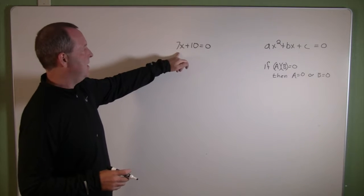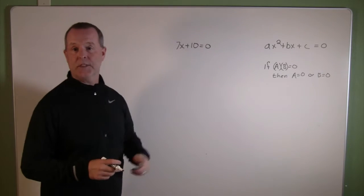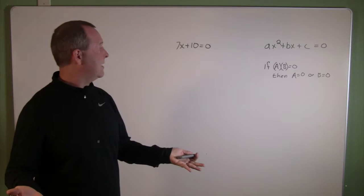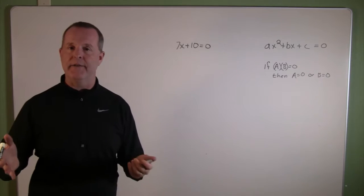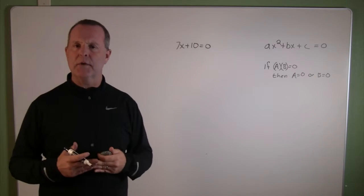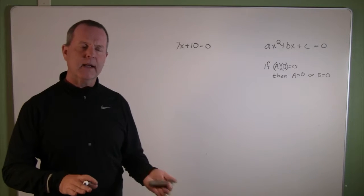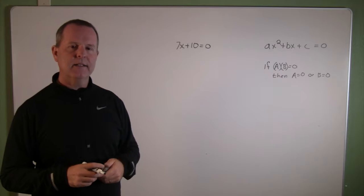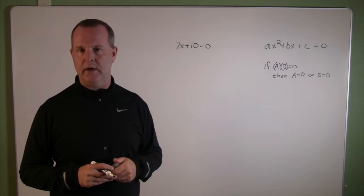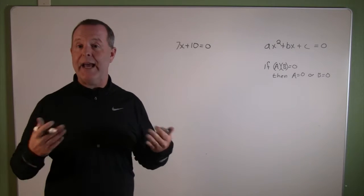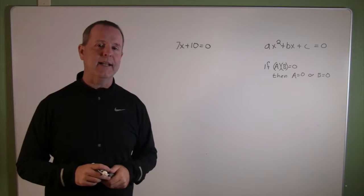Well, if the equation was just simply 7x plus 10 equals zero, well, we can subtract 10 from both sides and divide by 7. And we become comfortable in solving linear equations. But when we do that process with a quadratic, it doesn't fall as straightforward. And so what we need to do is rely heavily upon our ability to factor.